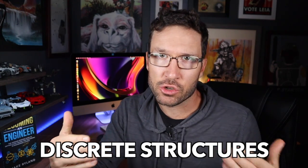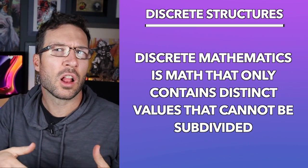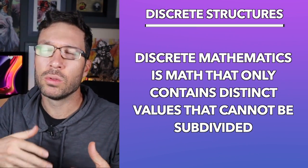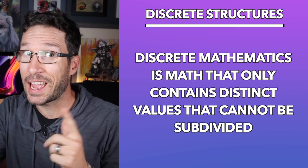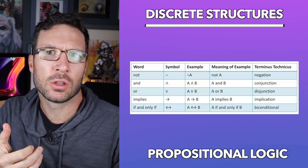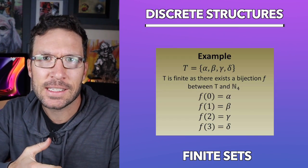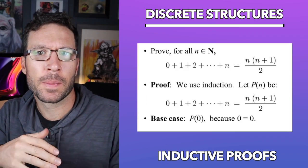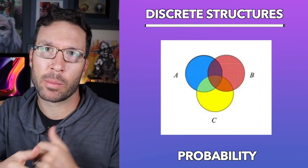Next up we have discrete structures. In this course you're going to learn all about discrete mathematics, which is math that only contains distinct values that cannot be subdivided. Simply put, discrete mathematics is how we digitize information — it's either on or off, either a one or a zero. Other topics include propositional logic, predicate logic, finite sets, functions, relations, inductive proofs, recurrence relations, and probability.